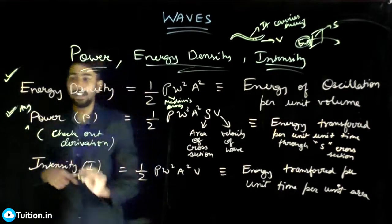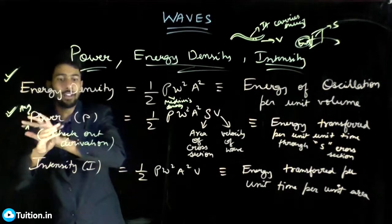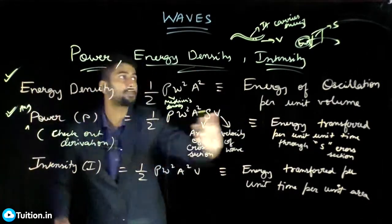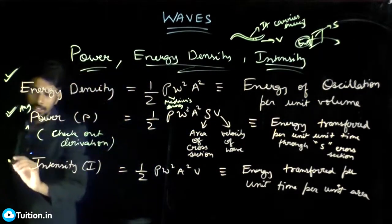Instantaneous power is different. This is the average power. At any time for a particular motion in a particular time t, what is the average power that is transferred through this cross sectional area? It is given by this formula. Third is your intensity.